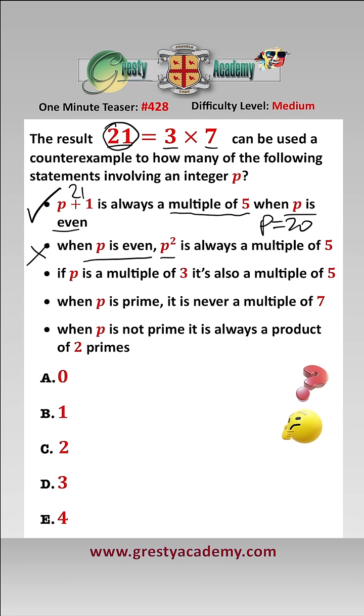Number three: if p is a multiple of 3 then it's a multiple of 5. Well, 21 is a multiple of 3 but it's not a multiple of 5, so therefore we can use this result as a counterexample to that.